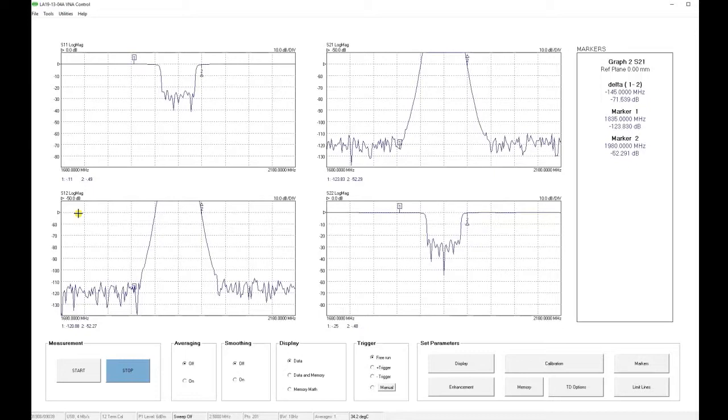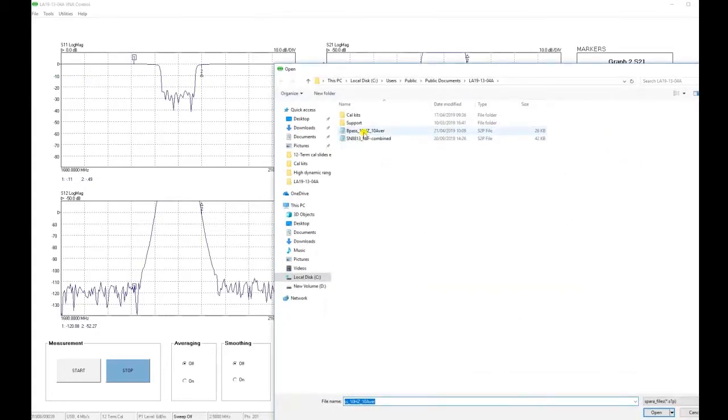Earlier, I repeated the calibration and measurement also using a 10 Hz bandwidth, but with the averaging set to 10, that approximates to reducing the measurement bandwidth from 10 Hz down to 1 Hz. I saved the measurement results to disk, and I will now load those results to the memory so that you can see the difference.